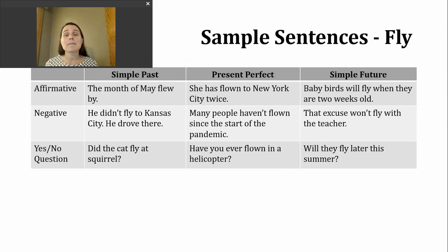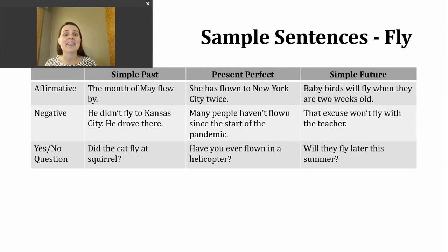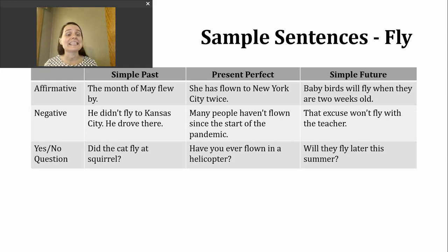To make a yes or no question in the simple past, start with did, then your subject, and then the base form of the verb. For example: Did the cat fly at the squirrel?